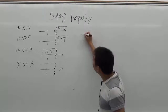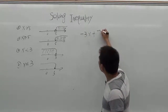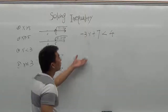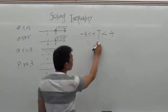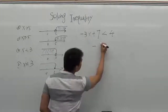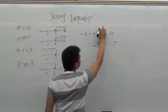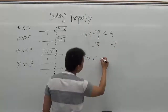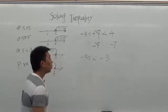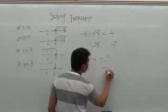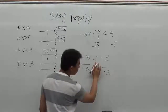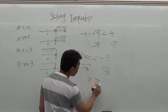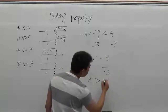Let's look at one more: negative 3x plus 7 less than 4. Here there is addition, so subtract 7 from both sides. Negative 3x, the 7s cancel out, less than 4 minus 7 gives us negative 3. Then divide by negative 3 for both sides. Be careful — here it's a less than sign, and because we divide by a negative, we change it to a greater than sign. Negative 3 divided by negative 3 gives 1, so x greater than 1.